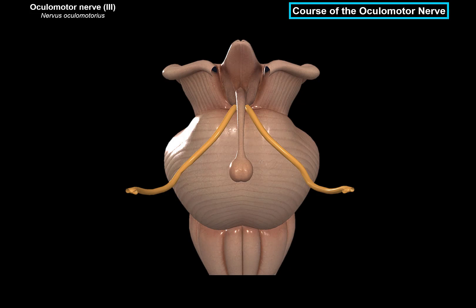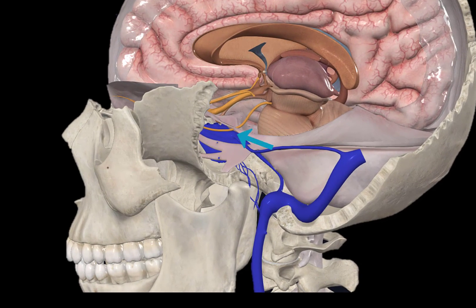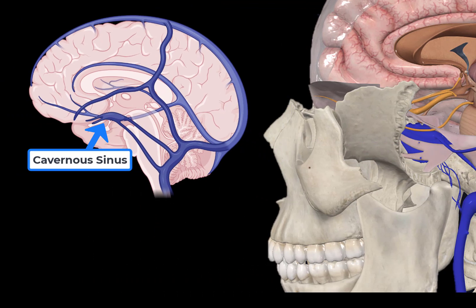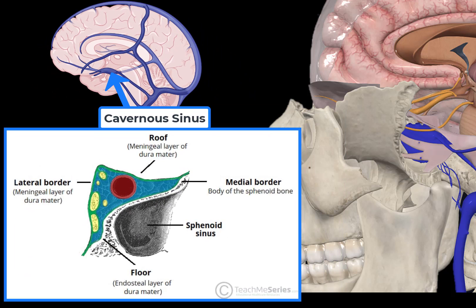As the oculomotor nerve leaves the anterior midbrain, it penetrates the dura mater and runs through the lateral wall of the cavernous sinus. The cavernous sinus is part of the dural sinuses carrying venous blood, and several structures pass through it to enter the orbit — classified by whether they travel through the sinus itself or its lateral wall. The oculomotor nerve travels through the lateral wall. After leaving the cavernous sinus, it enters the orbital cavity through the superior orbital fissure within a fibrous ring called the common tendinous ring.